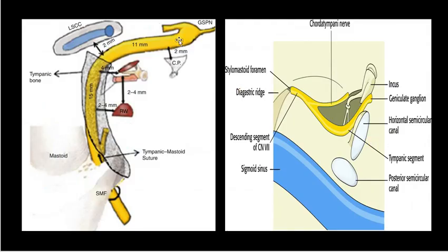Last but not least is the digastric ridge. The facial nerve exits the mastoid at the anterior end of the digastric ridge. Therefore, if you find the digastric ridge, you can follow the nerve anteriorly. Here you can see the geniculate ganglion and the processus cochleariformis. The facial nerve lies around 2 mm superior to the cochleariform process, so do not go too far above it. This is the dome of the lateral semicircular canal — the facial nerve lies around 2 mm below the lateral semicircular canal.